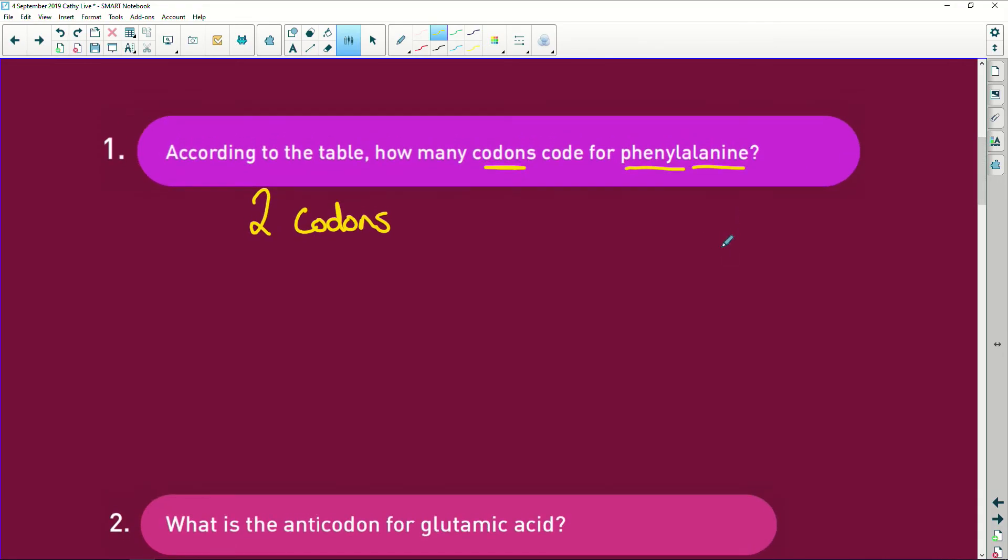Remember that you are always going to have adenine to thymine and cytosine to guanine—those are your nitrogenous bases. These are your purines and these are your pyrimidines.